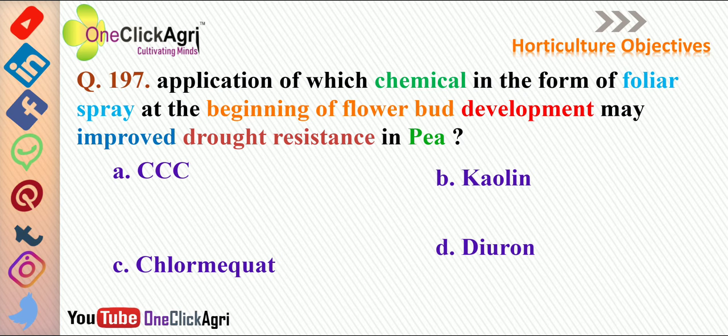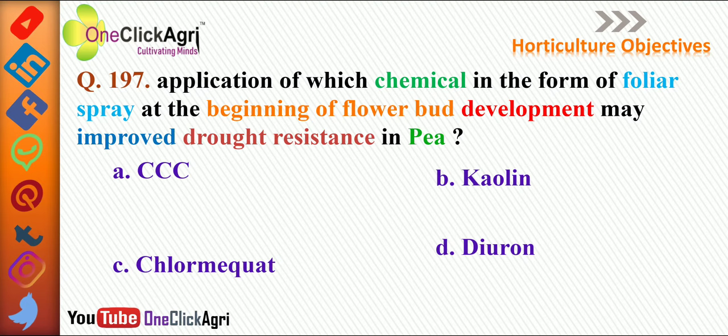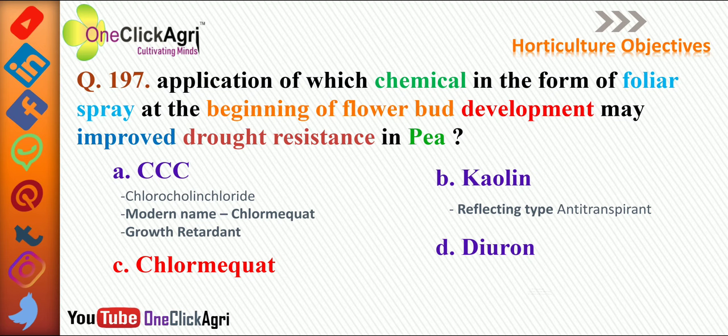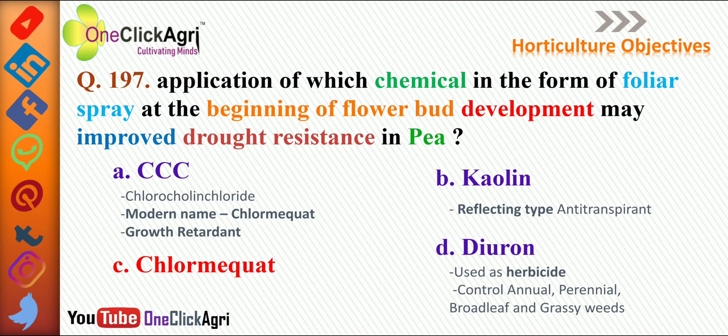Application of which chemical in the form of foliar spray at the beginning of flower bud development may improve drought resistance in Pea? The right answer is Chlormequat, also called CCC. It is a modern name for CCC and is used as a growth retardant. Kaolin is a reflecting type of anti-transpirant.